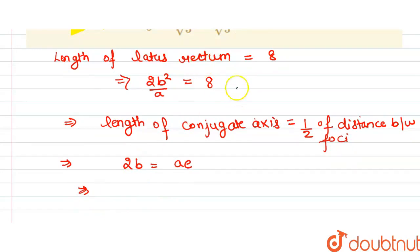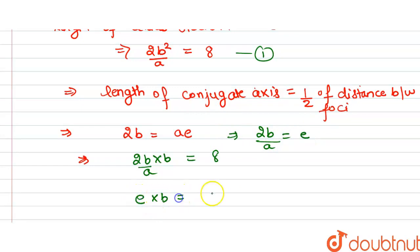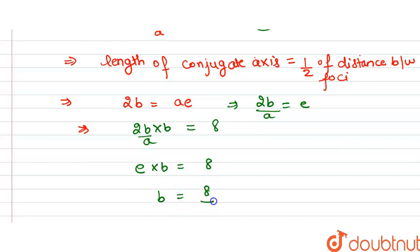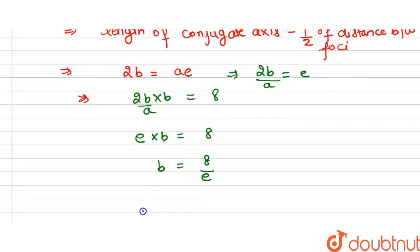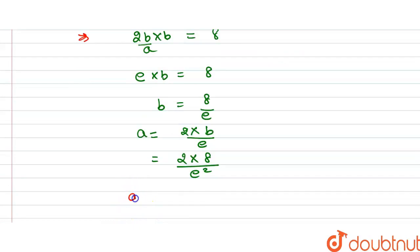Writing our first equation: 2b²/a = 8. From the second condition, 2b/a = e. Substituting, we get e·b = 8, so b = 8/e. Putting this back, a = 2b/e = 16/e².